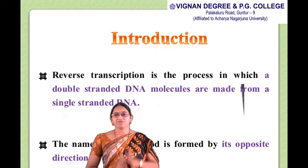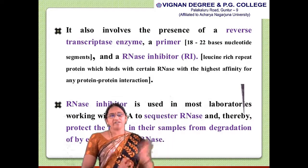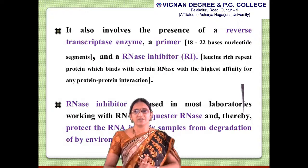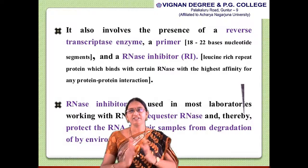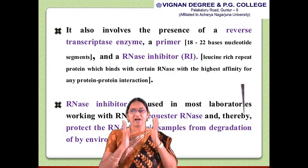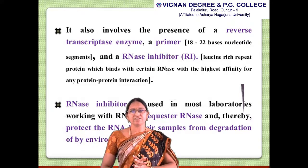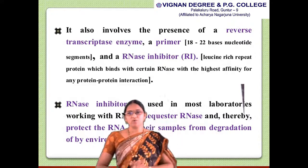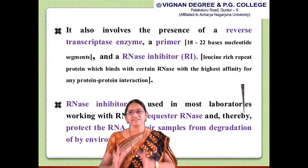The name of this method is derived from its opposite direction to transcription. It involves the presence of a reverse transcriptase enzyme, a primer of about 18 to 22 nucleotide segments, and an RNase inhibitor involved in this reverse transcription process.